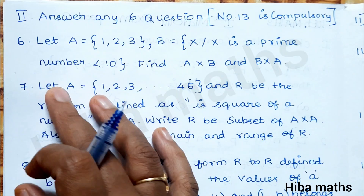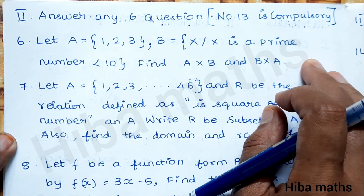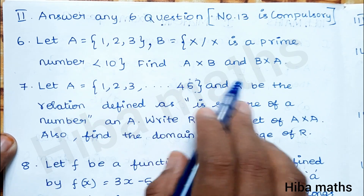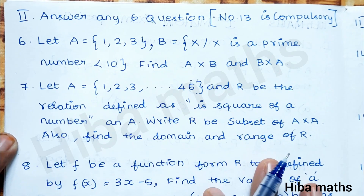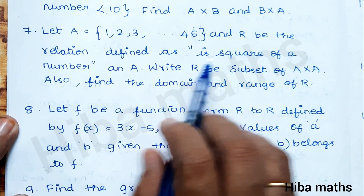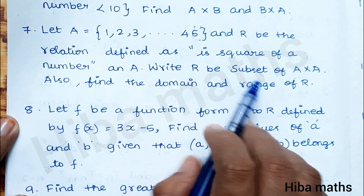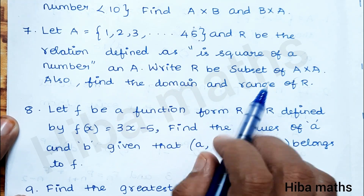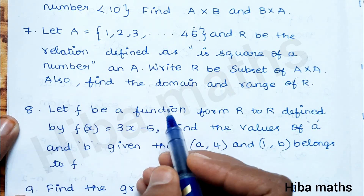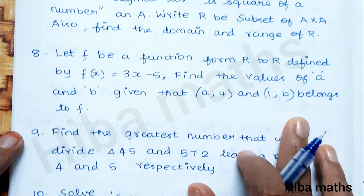Second section: Answer any 6 questions. Thirteenth question — first sub-question, 2 marks: find A cross B and B cross A. That's easy. The domain range is 1 up to 45. Here is the range and the domain. Is it the square? 1 squared, 2 squared, 3 squared.